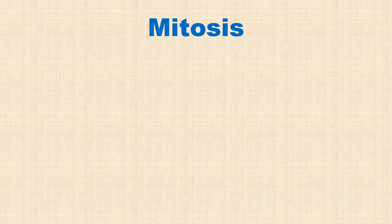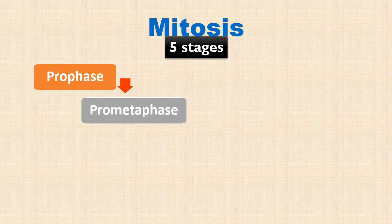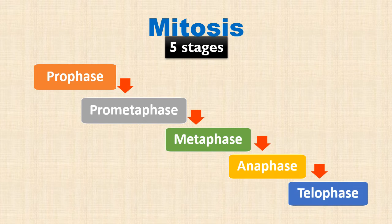Mitosis is a continuous process, but we study it as a set of five stages. Each stage is characterized by a particular series of events. The five stages of mitosis are: Prophase, Prometaphase, Metaphase, Anaphase, and Telophase. Let's study them one by one.